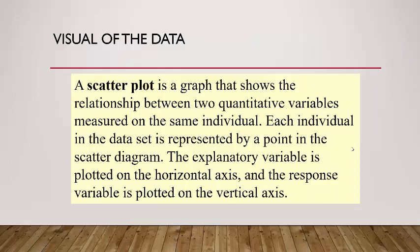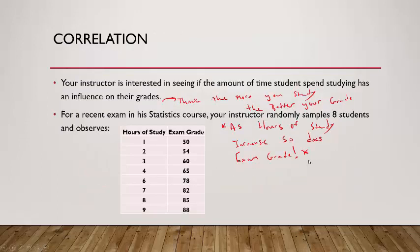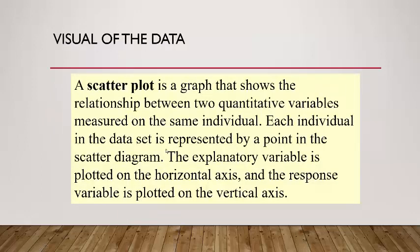A scatterplot — sometimes called a scatter diagram — is a graph that shows the relationship between two quantitative variables measured on the same individual. Each individual in the data set is represented by a point, plotted as an ordered pair. The explanatory variable is plotted on the horizontal x-axis, and the response variable is plotted on the vertical y-axis.